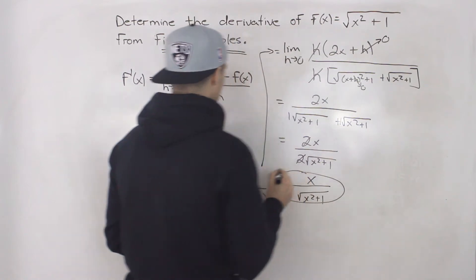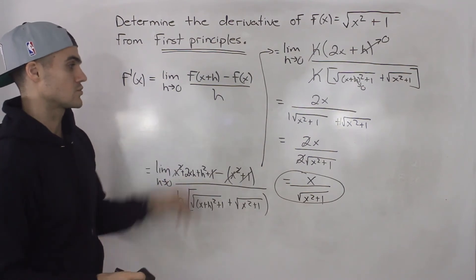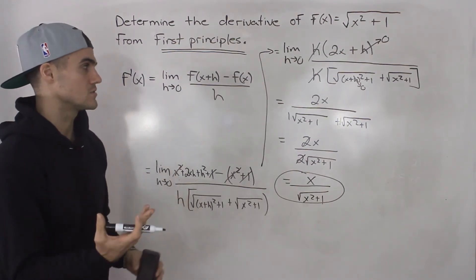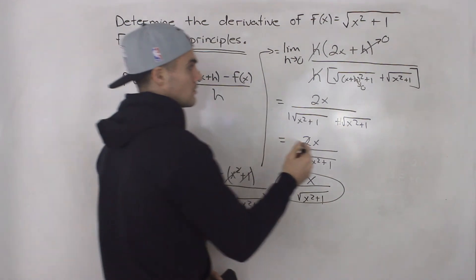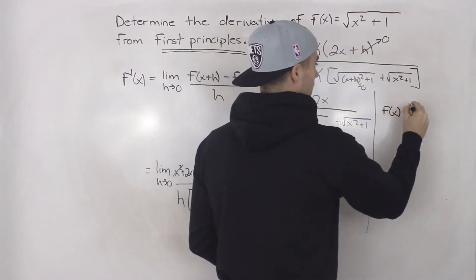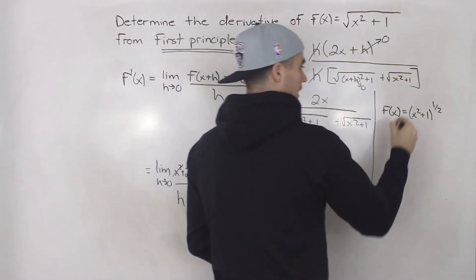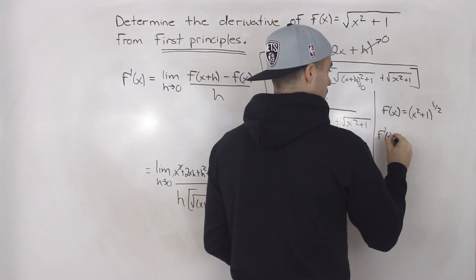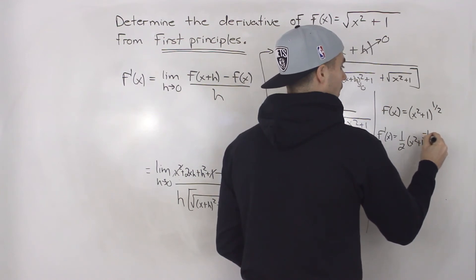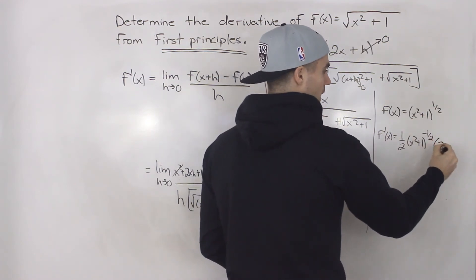That is the derivative of that function, found using first principles with the difference quotient. Now, because you know how to take the derivative of complex functions using the chain rule, you can check your answer. Take this function and rewrite it as x squared plus one to the power of a half — changing the radical to a rational exponent — then apply the chain rule: bring the half down, x squared plus one, subtract one from the exponent, giving negative one half, times the derivative of the inside bracket which is 2x.